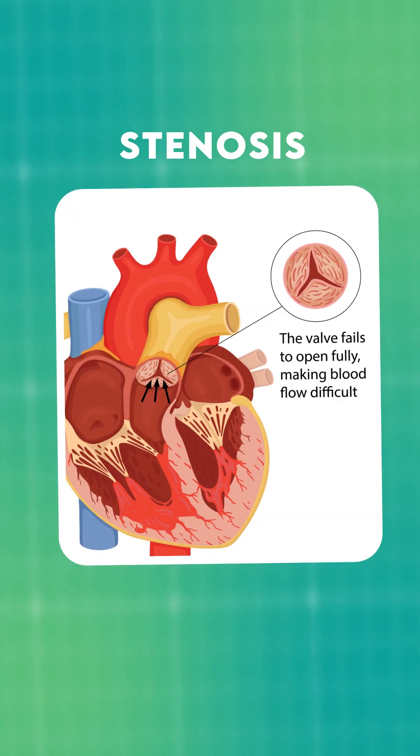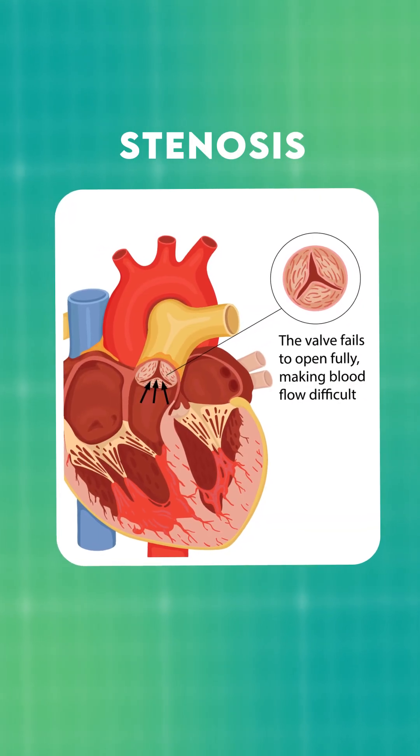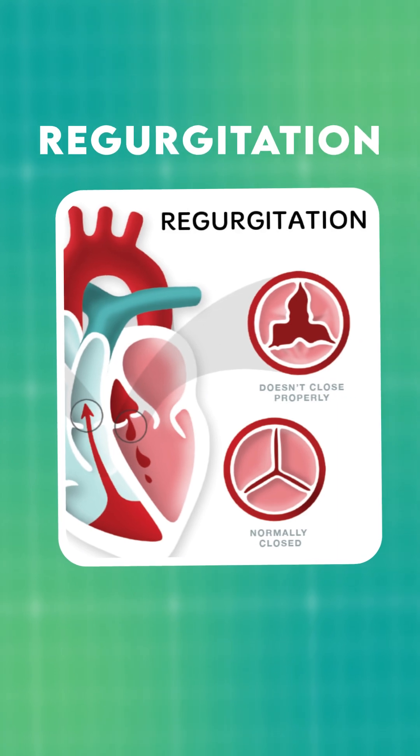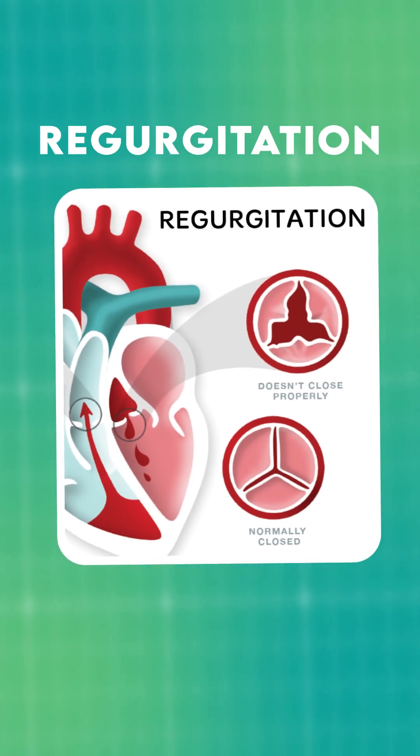Heart valve disease can cause improper functioning of the leaflets. There are two basic types of heart valve disease. First, narrowing of the valve, which is called stenosis. And the next, leak in the valve, which is called regurgitation.